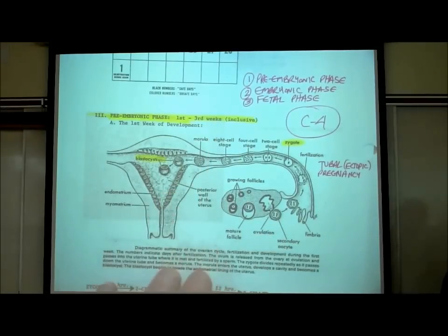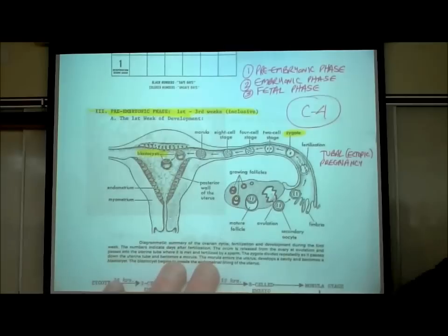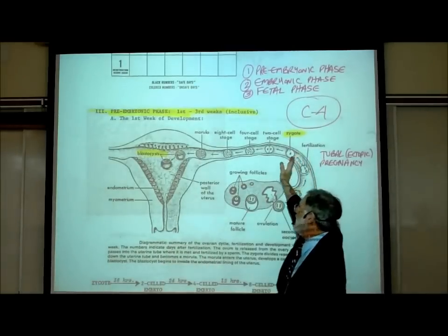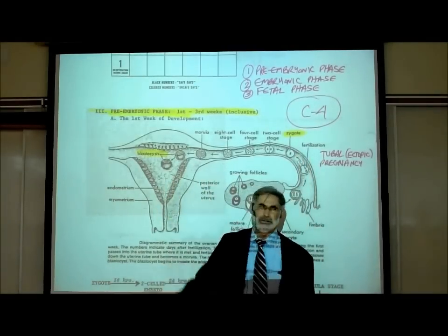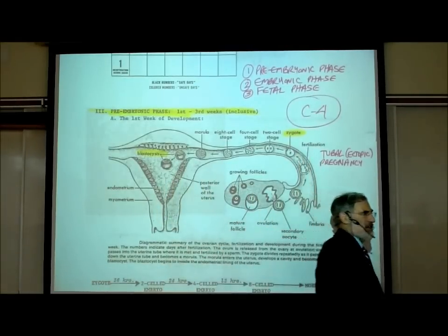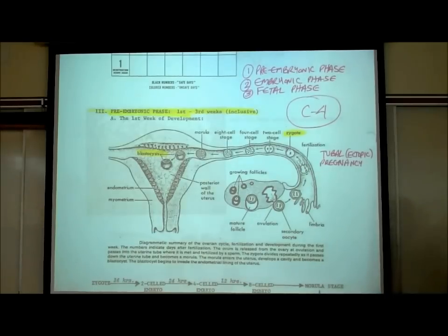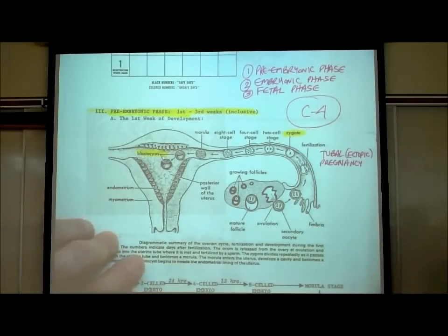What happens during the first week of development? It's pictured right here. You go from a zygote to a blastocyst, and the blastocyst implants in the endometrial lining at the end of the first week.